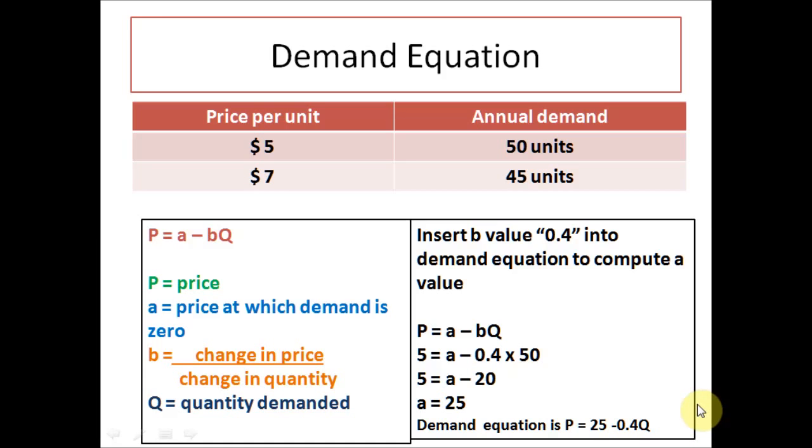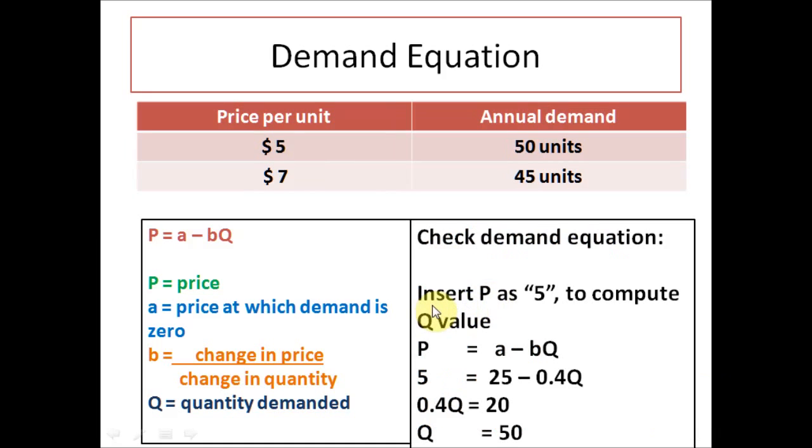Last step is to check whether your equation is correct. This can be done by inserting P as 5, which is the current price. In order to compute Q, we know that for $5 per unit, you should get 50 units as the Q.